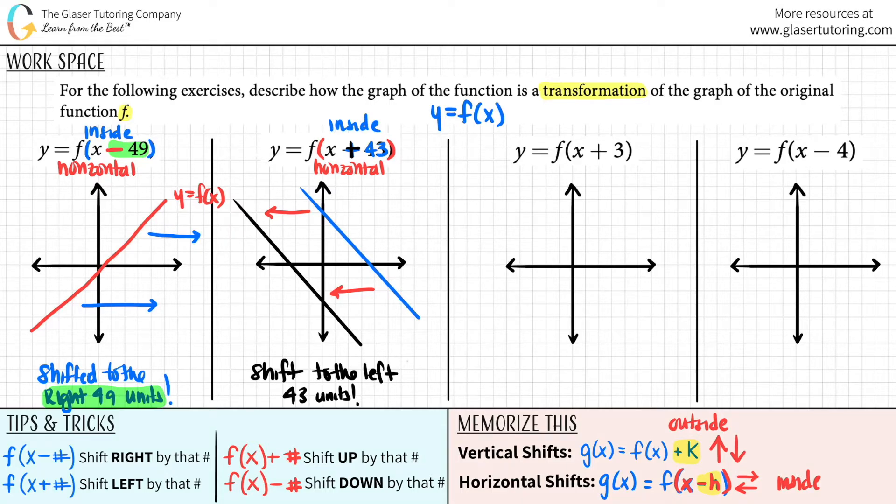Let's go to the next one. We have a plus three, and it's inside. So again, this is a horizontal shift. Plus means shift to the left. So how many units did we shift over? Three units.